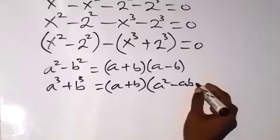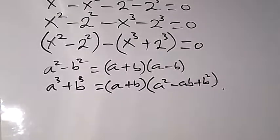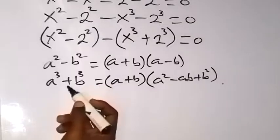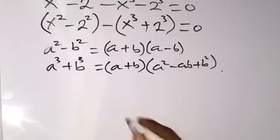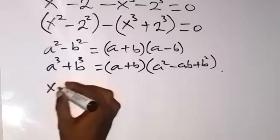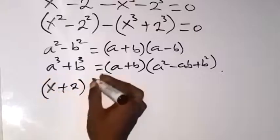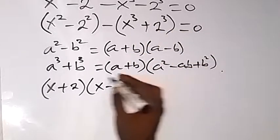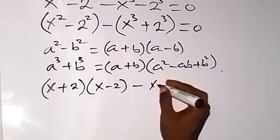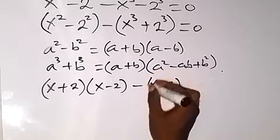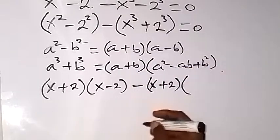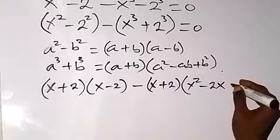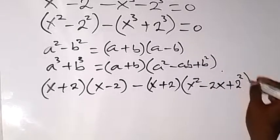We have x minus ab, then plus b squared here. So these are the identities we need to apply. And when we apply those identities, we can rewrite this bracket such that x squared minus 2 squared can be written as x plus 2 multiplied by x minus 2, applying difference of two squares. Then applying the other identity, the sum of two cubes, we have x plus 2 into bracket a squared, that's x squared, then minus 2x, that's minus ab, then plus b squared, that's 2 squared, equals to 0.